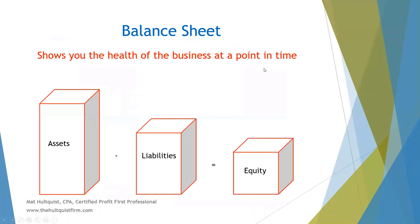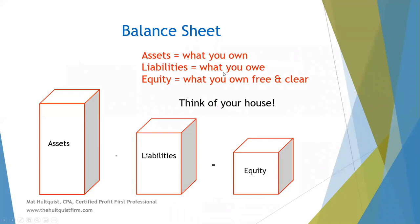The balance sheet shows you the health of your business at any point in time, and it's represented by this formula: assets minus liabilities equals equity. Your assets are what you own; your liabilities are what you owe; and your equity is what you own free and clear. Think about it like a house — if you own a house worth $300,000 that's your asset, if you have a mortgage of $200,000 that's your liability, and the difference between the two is your equity. Same thing in a business, and it's the same formula on every single balance sheet.